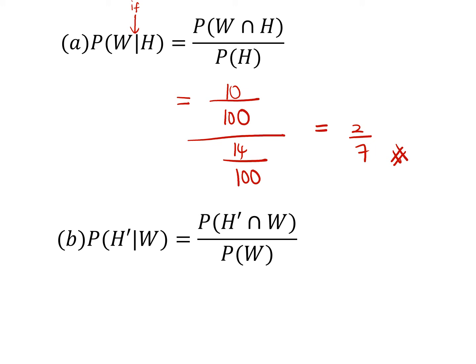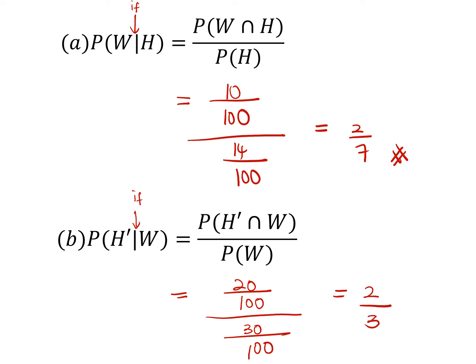For part B, the probability of not having high blood pressure given he is overweight uses the formula: P(H prime intersect W) over P(W). Looking at the table, H prime intersect W is 20 out of 100, and P(W) is 30 out of 100. Simplifying, you get 2 over 3.